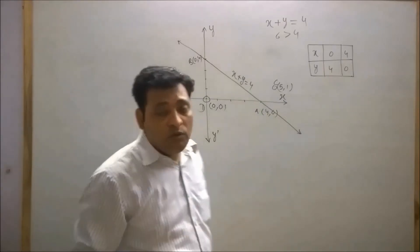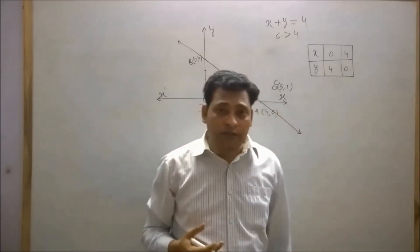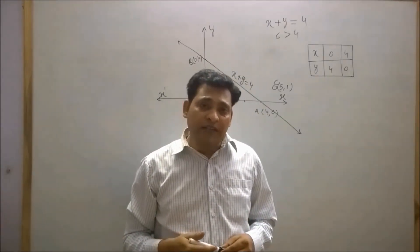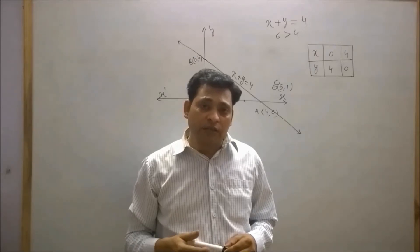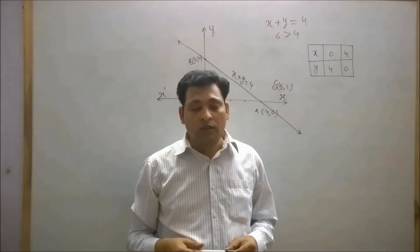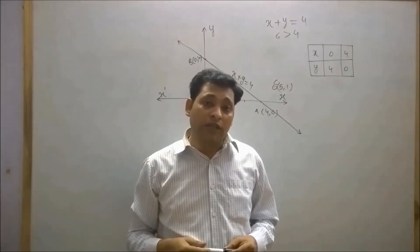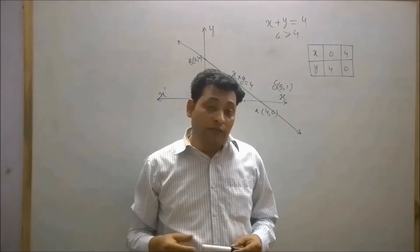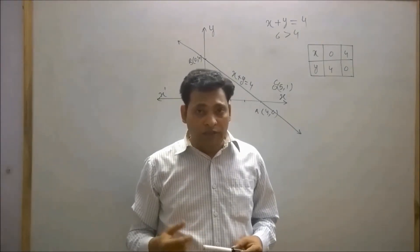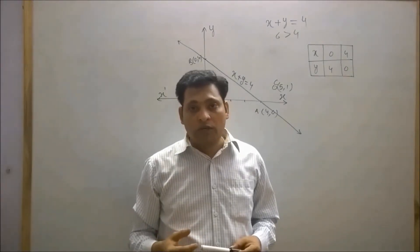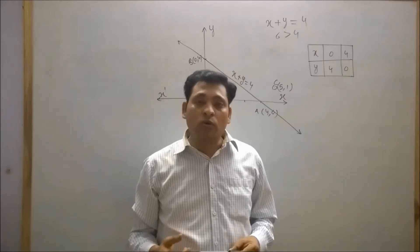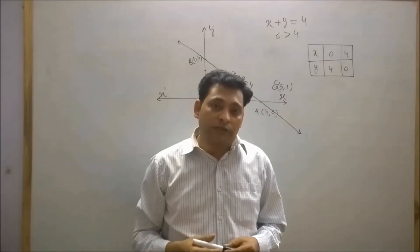So students, we can conclude three important points. First, points which lay on the line make left hand side equal to right hand side. Second, points on the same side of the line give the same sign of inequality. Third, points which are on opposite sides of the given line will show the opposite sign of inequality.